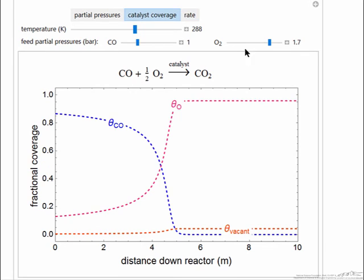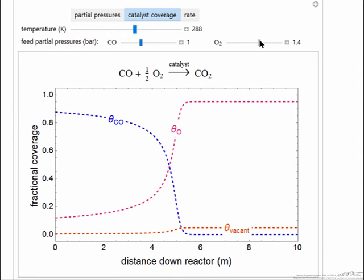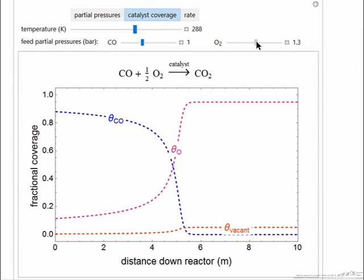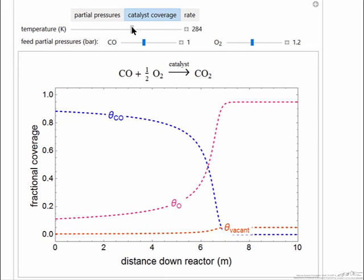So the idea here is that we can change the partial pressures and the point where we use up all the carbon monoxide changes. We can also change the temperature.